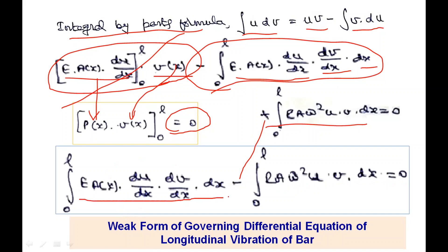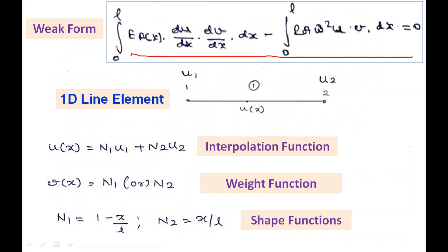In this weak form, the order of the differential operator is 1 — du/dx and dv/dx — so the second order differential equation is reduced to first order. That is why it is called the weak form. The minimum polynomial order required is now 1, so we can use the one-dimensional line element. The weak form is: integral from 0 to L of EA(x)(du/dx)(dv/dx) dx minus integral from 0 to L of ρAω²u·v dx = 0.